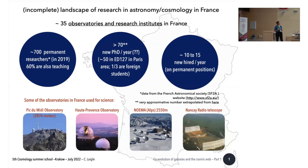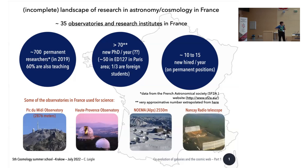In France, we have different permanent positions. Some researchers do only research while about 60% also teach to some extent. We have more than 70 new PhD students each year, with about 50 of them located in the Paris area. The doctoral school in Paris is the largest by far. Among these new PhD students, one third are foreign students.